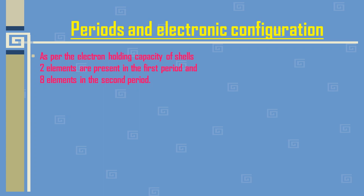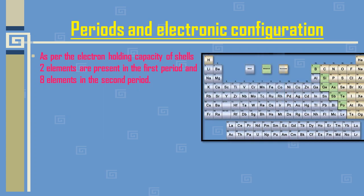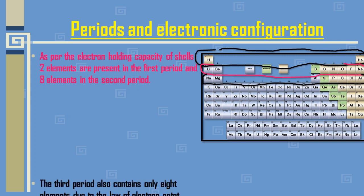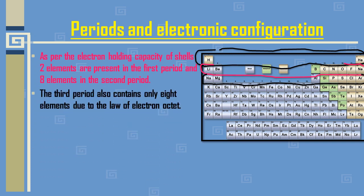As per the electron holding capacity of shells, two elements are present in the first period — hydrogen and helium. Eight elements are in the second period: lithium, beryllium, boron, carbon, nitrogen, oxygen, fluorine, and neon. The third period also contains eight elements: sodium, magnesium, aluminium, silicon, phosphorus, sulfur, chlorine, and argon.